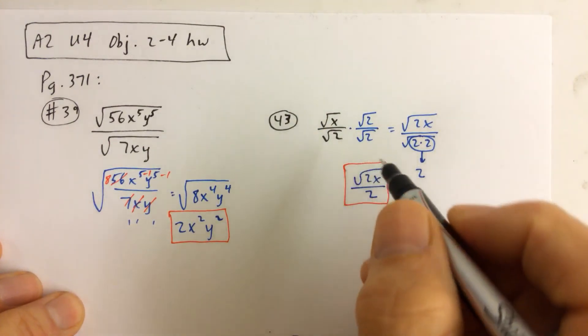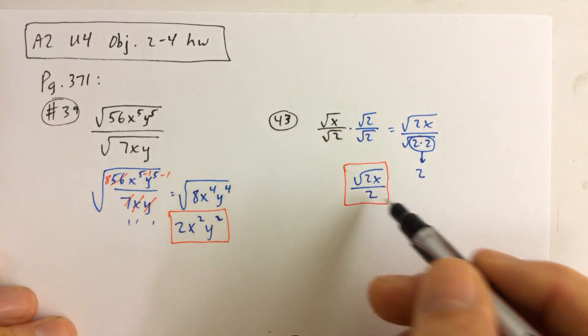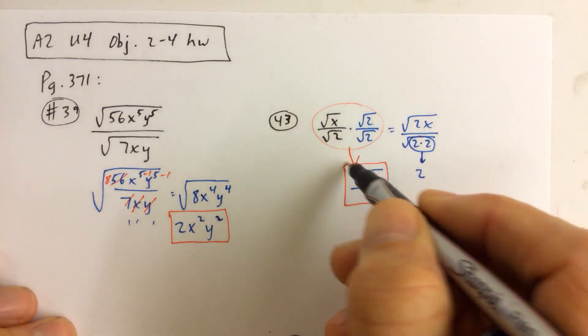Everybody has their own way of kind of looking at it. But when you multiply square root of 2 times square root of 2, you get 2. So we don't have to go through all of that. You can just see it. You can go right from here to here.